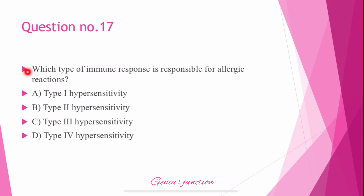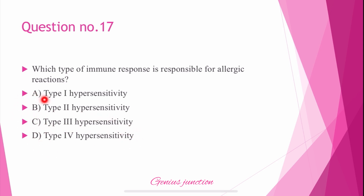Question number 17: Which type of immune response is responsible for allergic reactions? Options are: type 1 hypersensitivity, type 2 hypersensitivity, type 3 hypersensitivity, or type 4 hypersensitivity. The right answer is A — type 1 hypersensitivity. Type 1 hypersensitivity is responsible for allergic reactions.